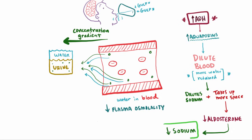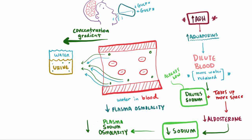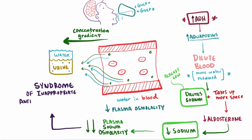Now our body is removing sodium from the blood that already has a low concentration of sodium. This means that plasma sodium osmolarity is dropping significantly, and this whole fiasco is called Syndrome of Inappropriate Antidiuretic Hormone, or SIADH.